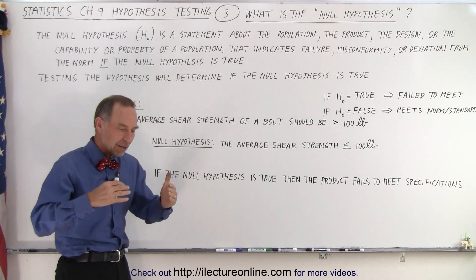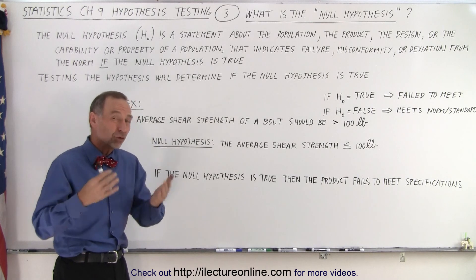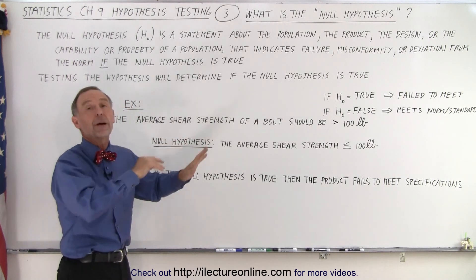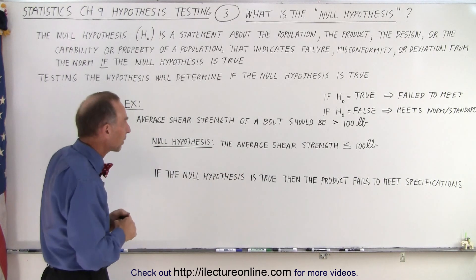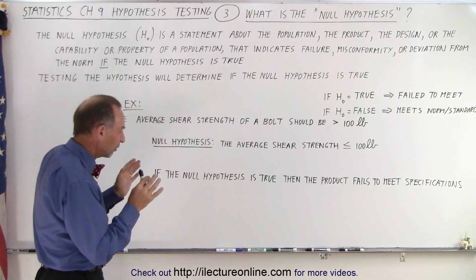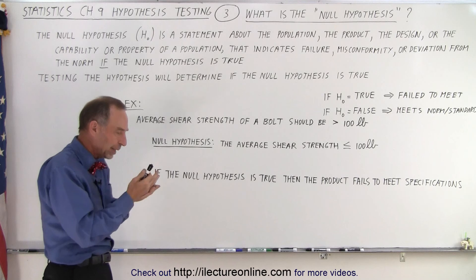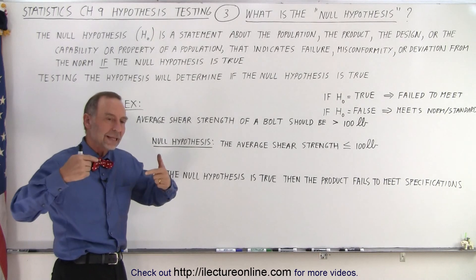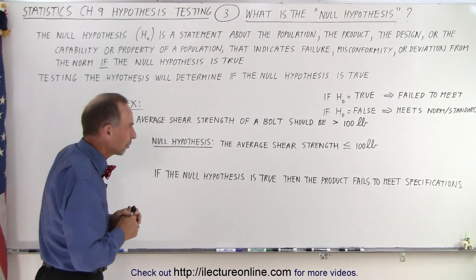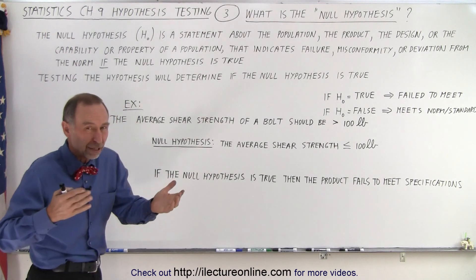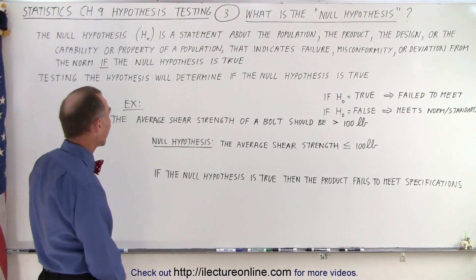So if we make a null hypothesis and it's true, then there's something wrong with the population or it deviates in an unexpected way from what we expect it to be. And so therefore we need to be able to formulate that null hypothesis which would say that if it's true, it indicates failure of some sort or nonconformity or not meeting standards.